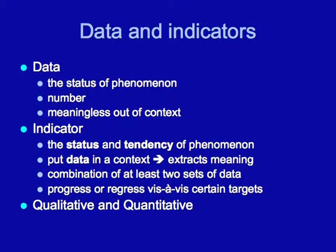What are data and what are indicators? What is the difference between them? Basically, data is a figure — a number which shows the status of a phenomenon, and it is something meaningless out of context. That could be the number of people who get the flu during winter, or the number of unemployed. Out of context, it tells us very little. An indicator is typically a combination of two data sets, and it helps us to show the status and tendency of a phenomenon — putting data in context and extracting meaning from it.